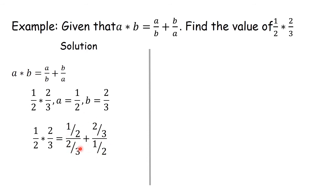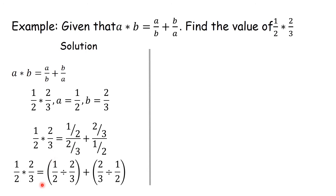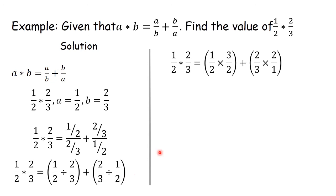To deal with this better, we introduce ordinary division signs. That gives us (1/2 ÷ 2/3) plus (2/3 ÷ 1/2). We know that when dividing fractions, we multiply by the reciprocal. So we have 1/2 times 3/2 — the reciprocal of 2/3 — plus 2/3 times 2/1 — the reciprocal of 1/2. That gives us 3/4, since 1 times 3 is 3 and 2 times 2 is 4, plus 4/3, since 2 times 2 is 4 and 3 times 1 is 3.